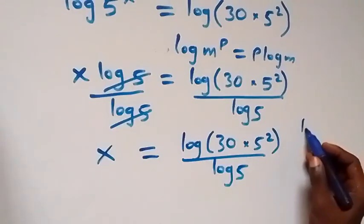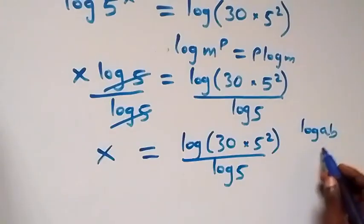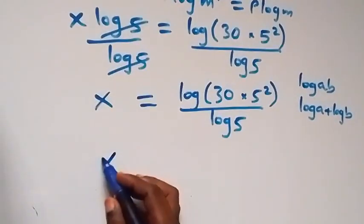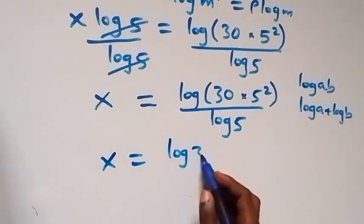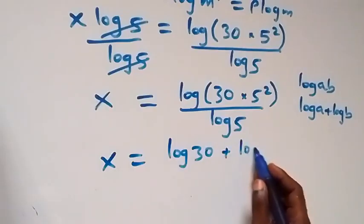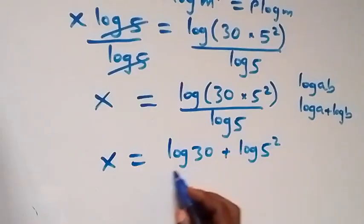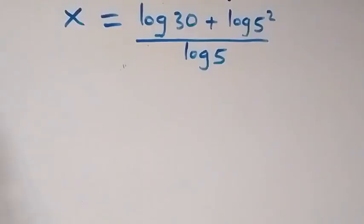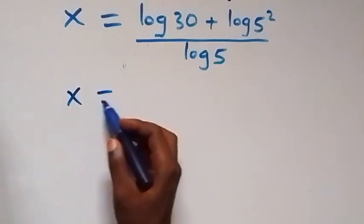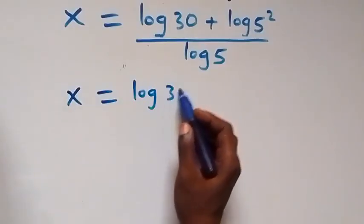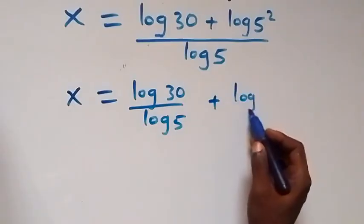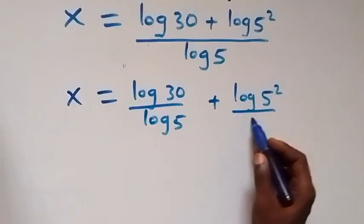Now, from the law of logarithms, when we have log of a times b, that is the same thing as log a plus log b. Applying this here, x becomes x equals log 30 plus log 5 squared, all over log 5. We can then separate this fraction into two fractions: x equals log 30 over log 5 plus log 5 squared over log 5.